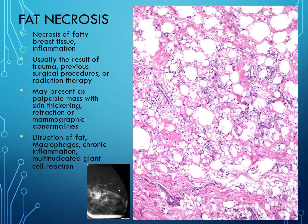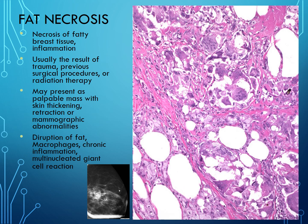Fat necrosis is another mimicker of malignancy — it's benign. This typically happens with trauma: fat cells die off and macrophages come in to clean up the mess. On low power you see residual fat cells with macrophages eating the debris. On higher magnification you see multinucleated giant cells (histiocytes) and foam cells — histiocytes filled with lipids as they eat up the dead fat cells.